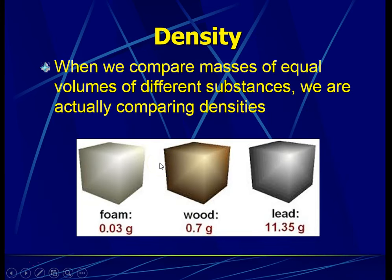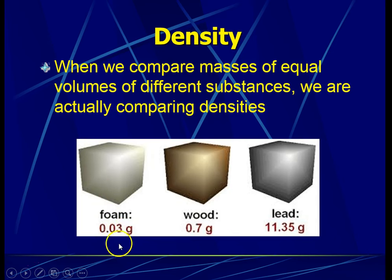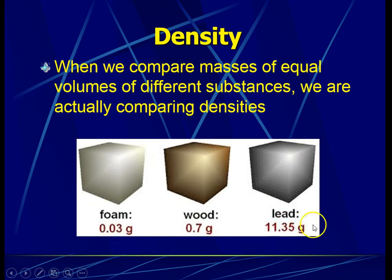Let's compare the masses of three different substances of equal volumes. They are all the same volume but contain different amounts of matter. Foam may contain just 0.03 grams of matter, wood 0.7 grams, and lead 11.35 grams. Since lead has 11.35 grams packed into the same space, lead has the highest density. Between wood and foam, wood has more mass, so wood has greater density than foam.